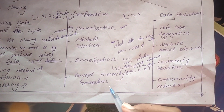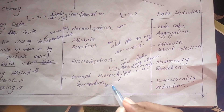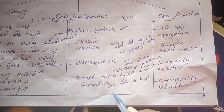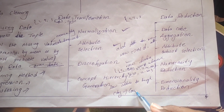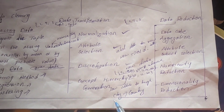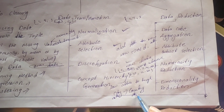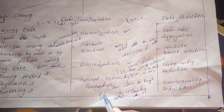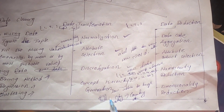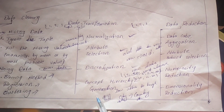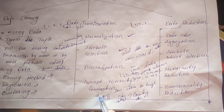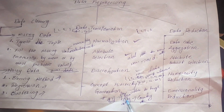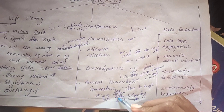Concept hierarchy generation is used to convert a low-level attribute to a high-level attribute. For example, a city can be converted into a country. In a data cube context, cities like those in Turkey can be rolled up — you can watch the previous data cube video for more detail.